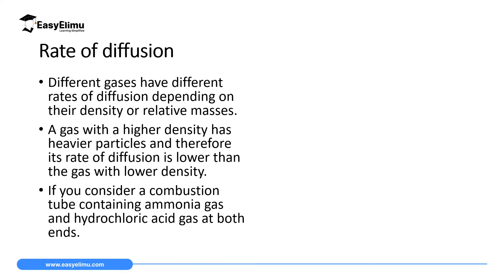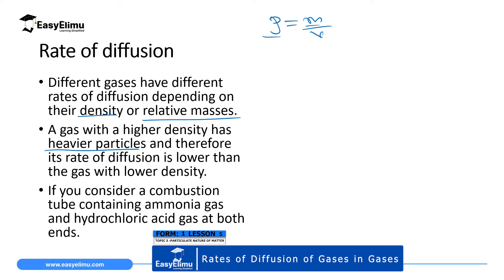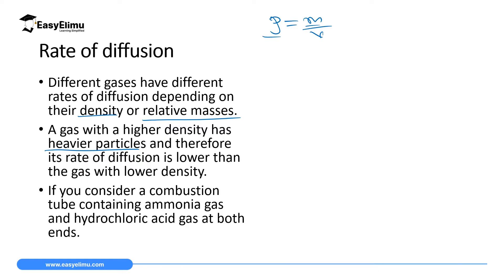We are going to realize that different gases have different rates of diffusion, and this depends on their density or relative mass. From your knowledge of measurement, density equals mass of a substance divided by unit volume. So density is directly proportional to mass. If a substance has high density, its mass is also high, the particles are heavy, and the rate of diffusion will be very slow.